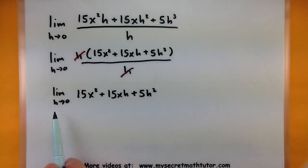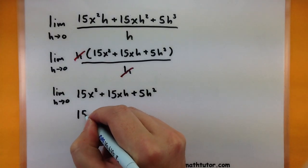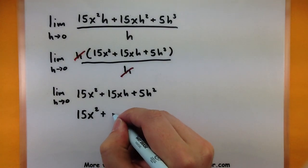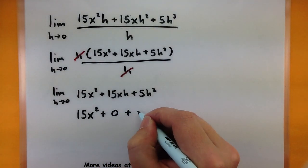So we can finally do this limit and we're looking as h approaches zero. So each one of these h's, they're going to be zero. Now as for this first 15x squared, it doesn't contain an h, so we're not going to touch it.